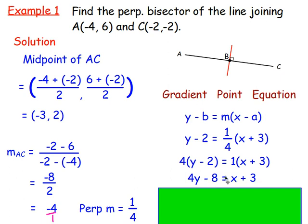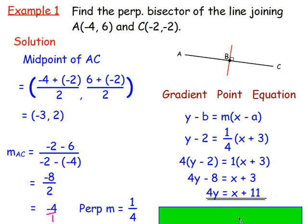And from there, add 8 to both sides. Remove the 8 over. And you would have 4y equals x plus 11. And that would be your answer. So that is how you'd work out the perpendicular bisector.